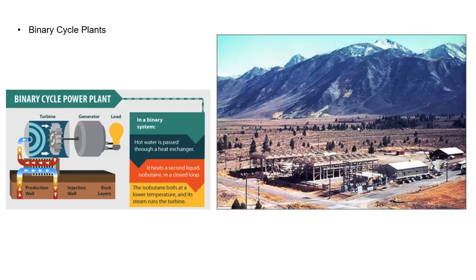Due to the lower temperatures of this water, the water must be pumped up to the earth's surface and boiled into a working liquid. Due to the abundance of cold water reservoirs in the earth's surface, binary cycle power plants make up the majority of geothermal plants in the United States. Binary cycle power plants also create minimal air emissions due to the constant separation between the water from the earth's surface and the working fluids used during the operation.